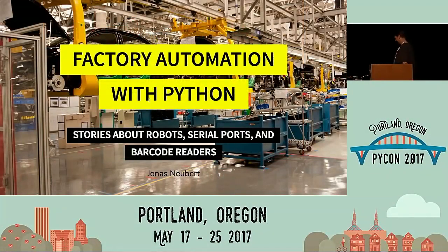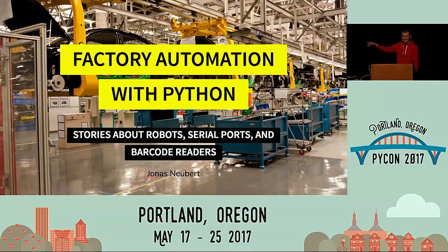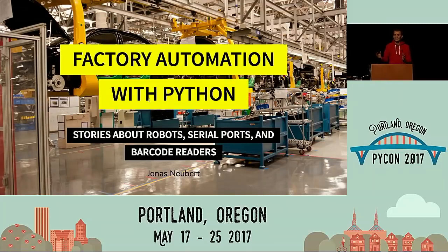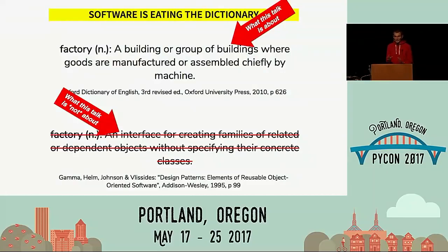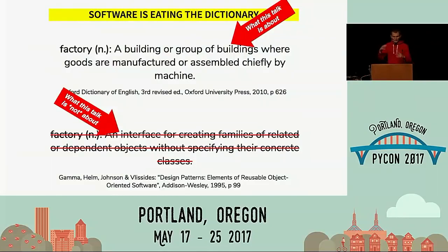Make him feel welcome, please. Let's talk about factory automation. This is my title slide, and I did some keyword stuffing there, and I put this nice stock photo of a car assembly line into the background — just to make it extra clear that this talk is about factory, as in a group of buildings where goods are manufactured or assembled chiefly by machines. That's from the Oxford English Dictionary. This talk is not about an interface for creating families of related or dependent objects without specifying their concrete classes, which is the design pattern that we all know.